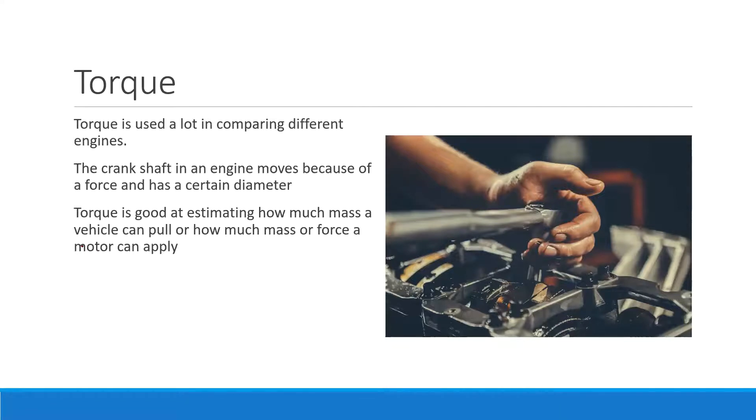Torque is used a lot when comparing different engines and different motors. When you look at someone that's got a dirt bike or a new four-wheel drive, they'll talk about how much torque that engine can produce. What that means is how much force over that radius can it get. The reason they do that is because ultimately engines have a crankshaft, which is the thing that does the spinning that allows the wheels of the car to move, and because it does it over a force over a certain amount of diameter.